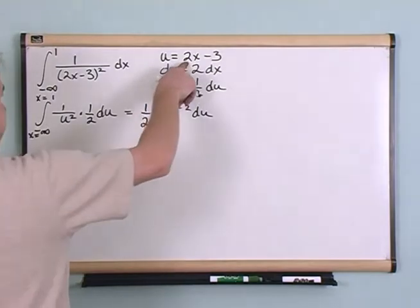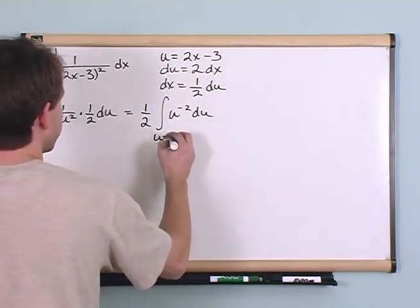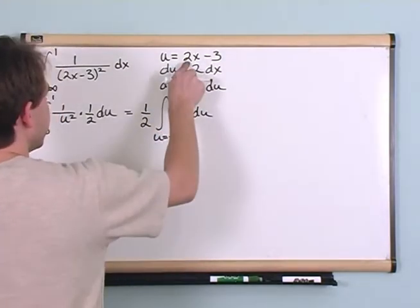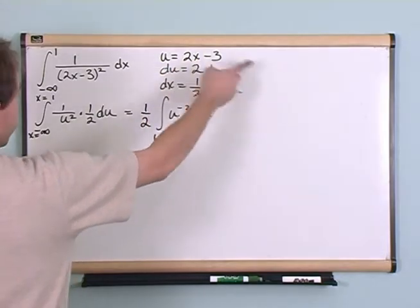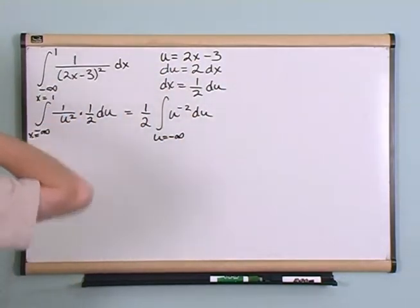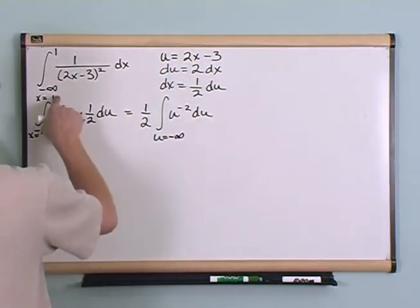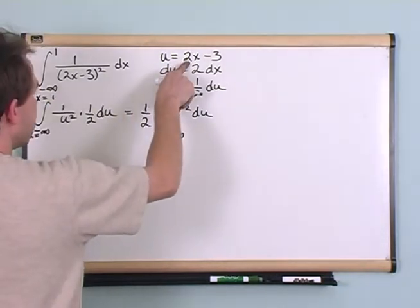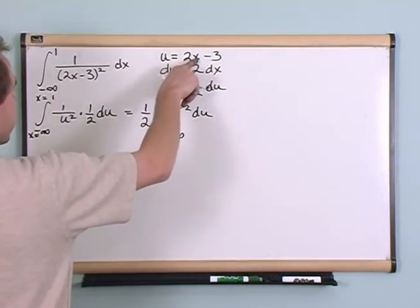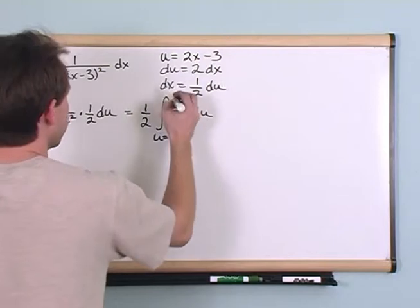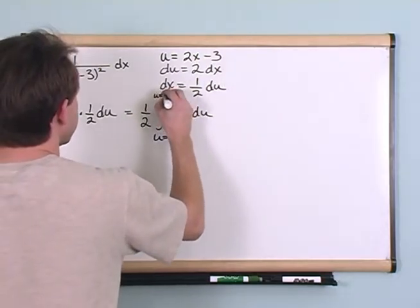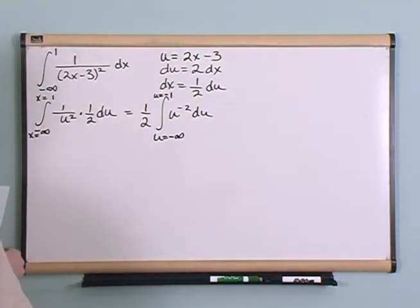If you plug in negative infinity into here you'll get u is equal to again negative infinity. Two times negative infinity minus three is just going to give you again negative infinity. And if you plug in a positive one in here, two times one is two, minus three is u is equal to negative one. So that's the upper limit.